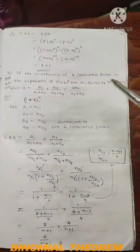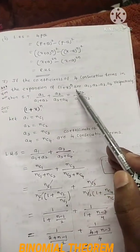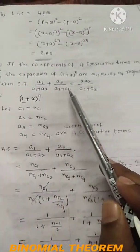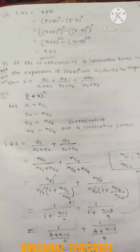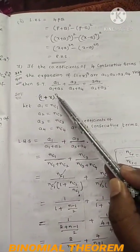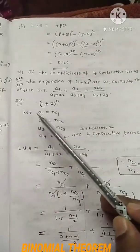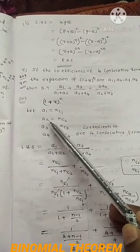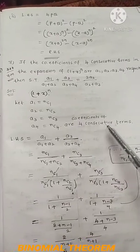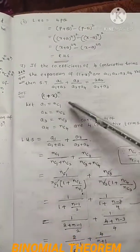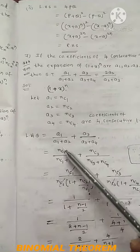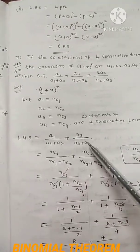One more question: if a1, a2, a3, a4 are the coefficients of four consecutive terms in the expansion of (1+x)ⁿ, then show that a1/(a1+a2) + a3/(a3+a4) = 2a2/(a2+a3). In (1+x)ⁿ the coefficients are nC0, nC1, nC2, nC3, ... so let a1 = nC1, a2 = nC2, a3 = nC3, a4 = nC4.